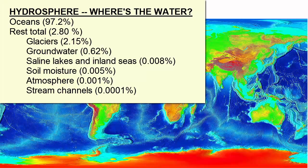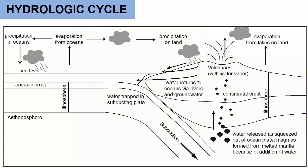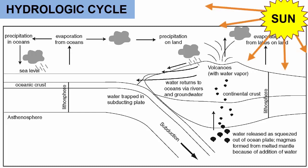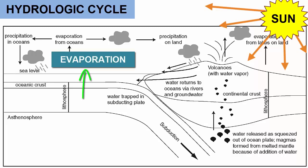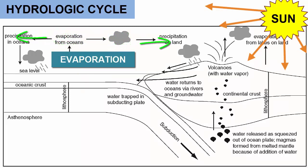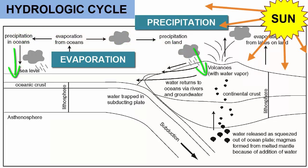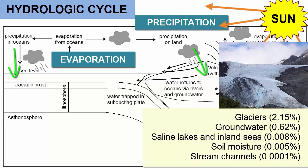How does water move around between all these different reservoirs? To answer that question, we need to review the water cycle, or hydrologic cycle. What drives the hydrologic cycle? The sun. Evaporation of water occurs, and that evaporated water is carried in wind currents around the planet, where eventually it cools so much that water is forced out as precipitation, or rain. If it rains on land, it gets trapped in glaciers, or streams, or soaks into the ground. Eventually, that water runs back to the ocean, where it can get picked up again.